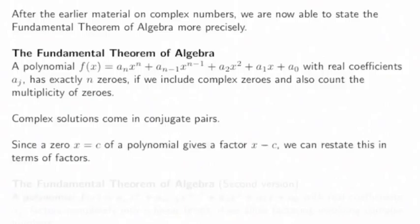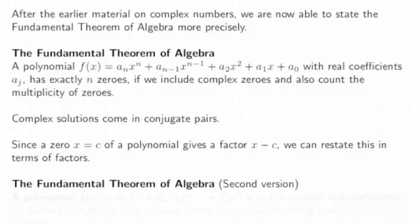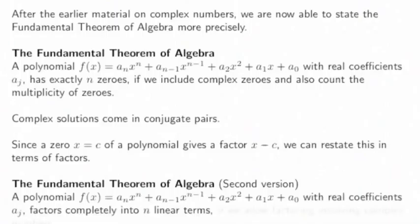Since a zero x = c of a polynomial gives a factor x - c of the polynomial, we can restate this theorem in terms of factors. The fundamental theorem of algebra in terms of factors says that if we're given a polynomial degree n with real coefficients, it factors completely into n linear terms, if we allow factoring involving complex numbers.